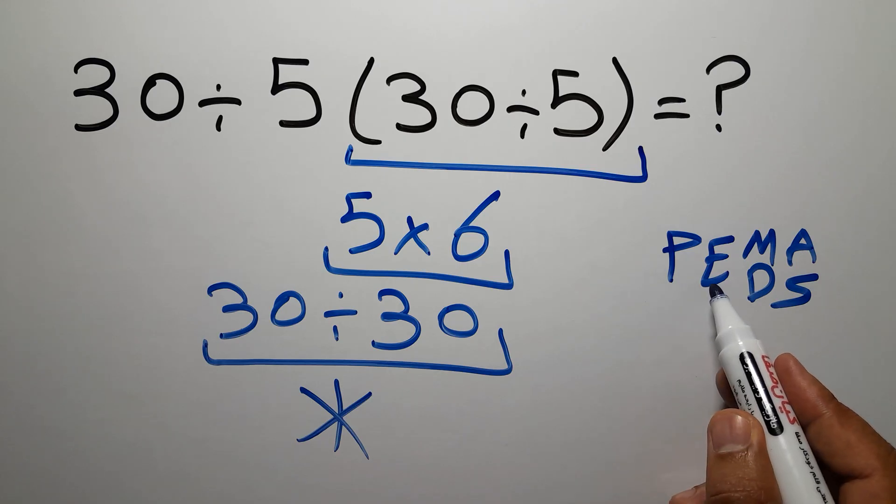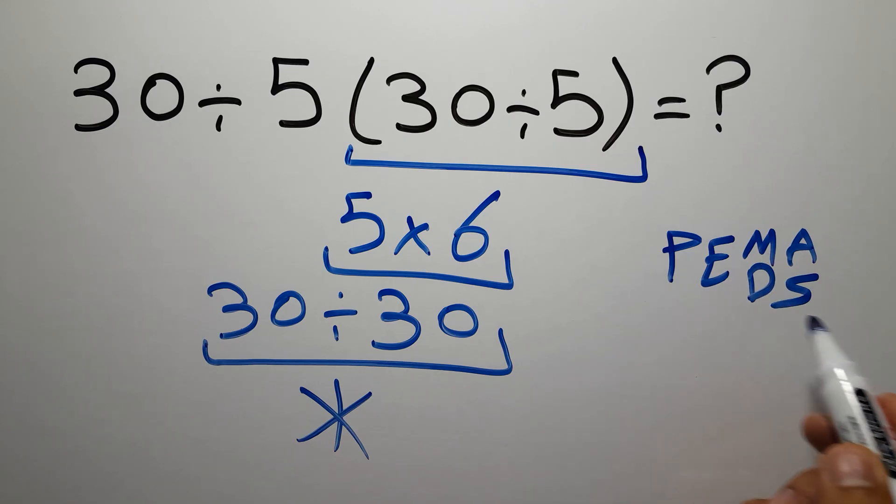First we have to do parentheses, then exponents, then multiplication or division, and finally addition or subtraction. Remember that multiplication and division have equal priority and we have to work from left to right. The same applies to addition and subtraction.